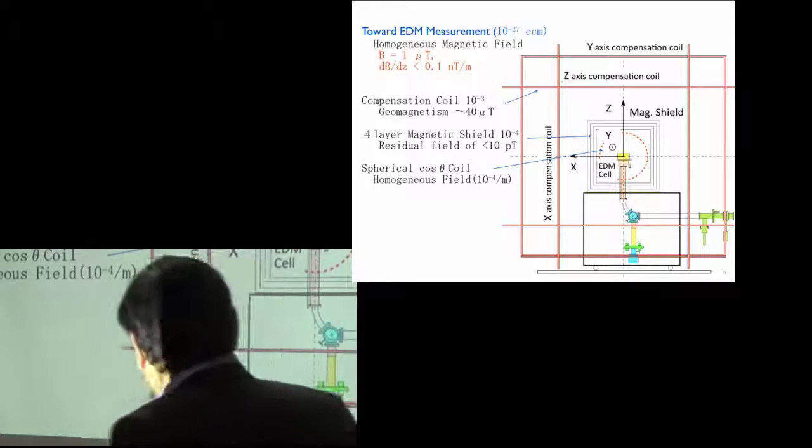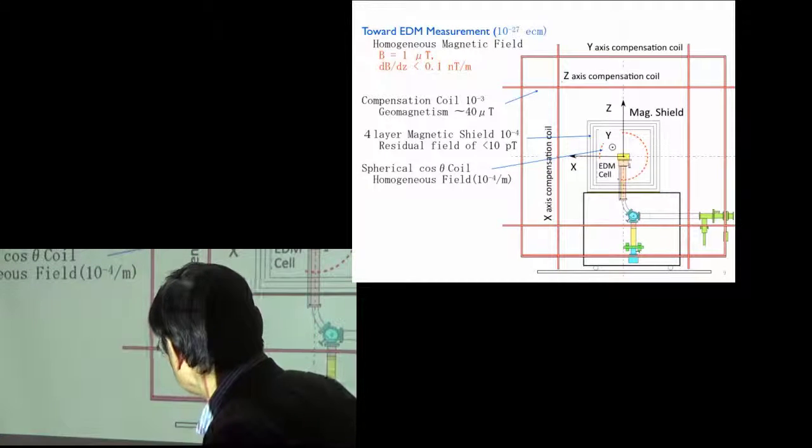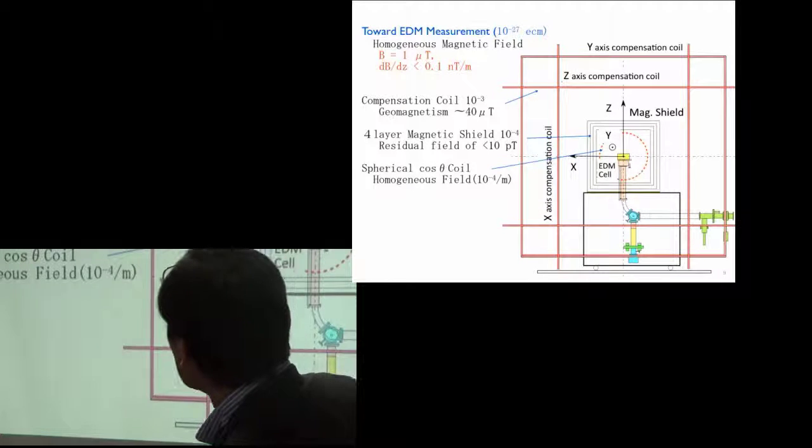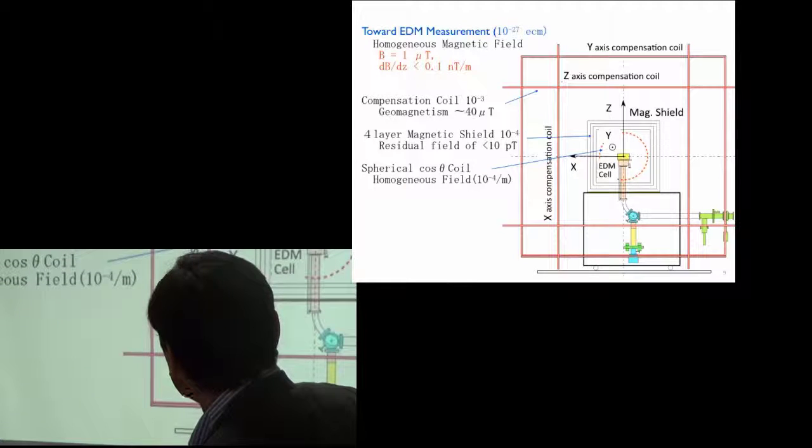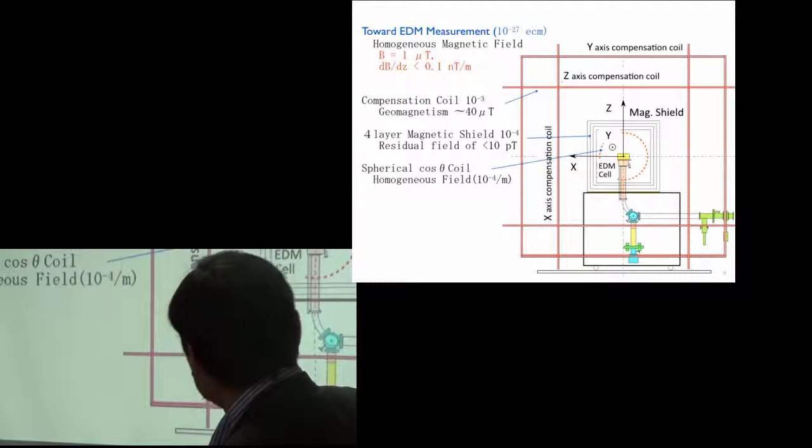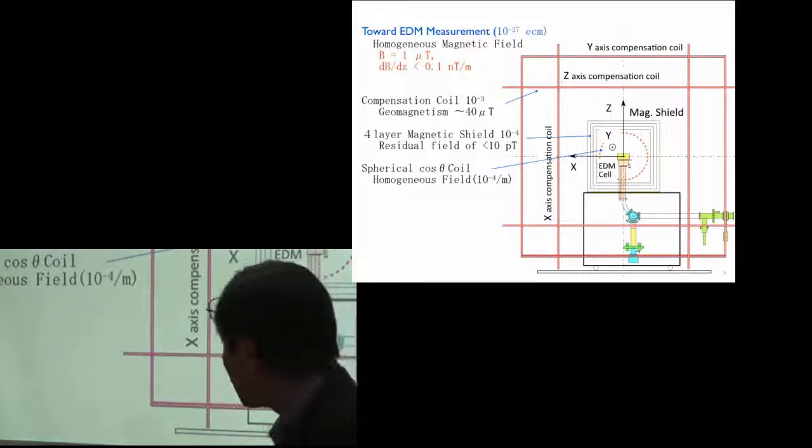And we would like to have this kind of very homogeneous magnetic field with a compensation coil from the geomagnetism of very large amount of about 40 microtesla, and then four layers of magnetic shield. And the residual field should be less than 10 picrotesla.